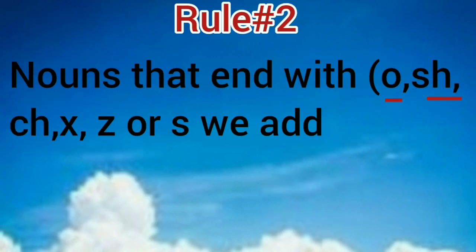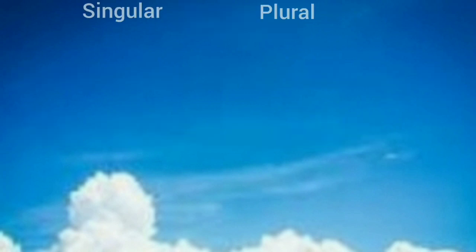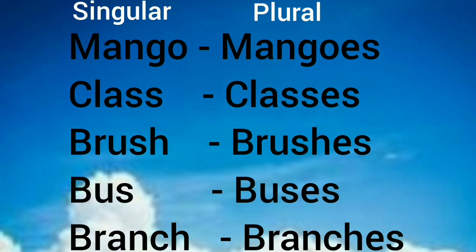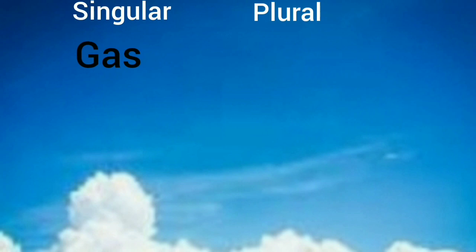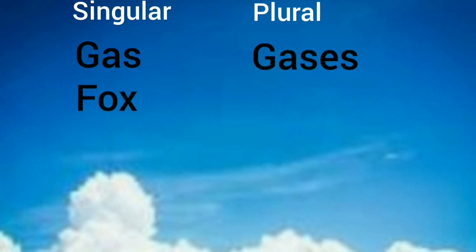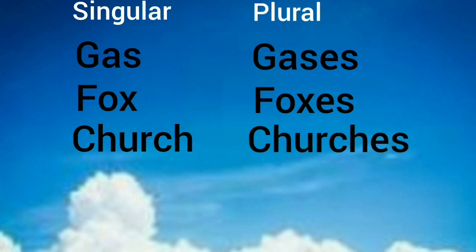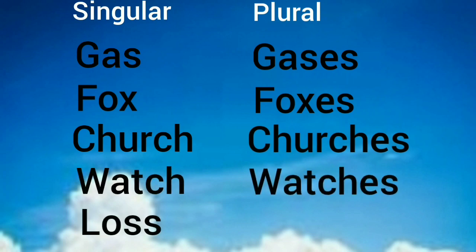For nouns that end with -s, -sh, -ch, -x, or -z, we add -es. Examples: mango-mangoes, glass-glasses, brush-brushes, bus-buses, branch-branches, gas-gases, fox-foxes, church-churches, watch-watches.